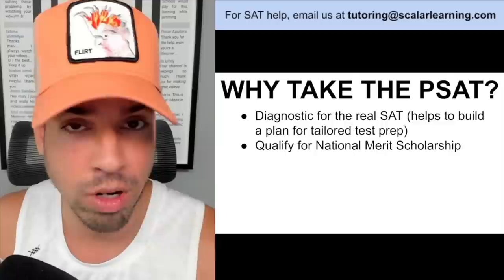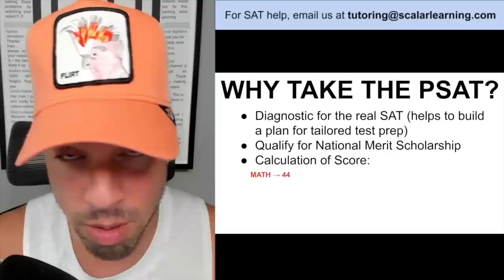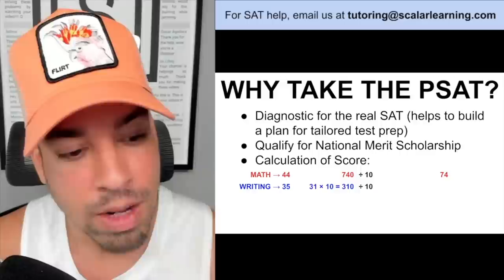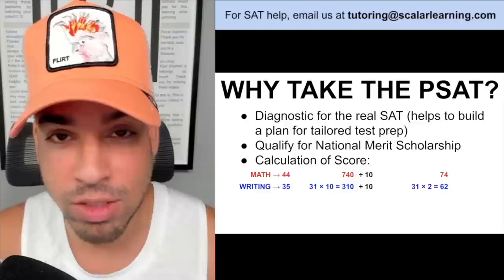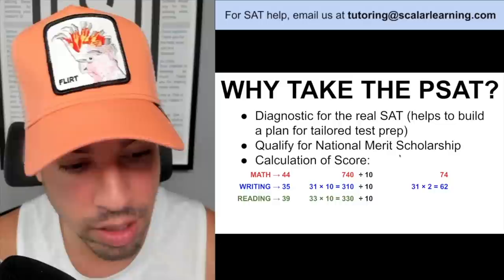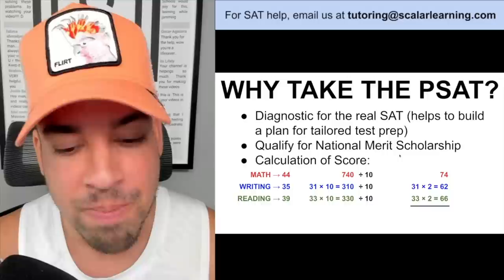There's also the possibility of qualifying for a National Merit Scholarship, which only applies if you're a junior. The reading and writing sections carry more weight in this calculation. Here's how it works: take your math scaled score, divide by 10 (e.g., 740 ÷ 10 = 74); take your writing scaled score, divide by 10 and multiply by 2 (310 ÷ 10 × 2 = 62); take your reading scaled score, divide by 10 and multiply by 2 (330 ÷ 10 × 2 = 66). Add those together: 74 + 62 + 66 = 202.